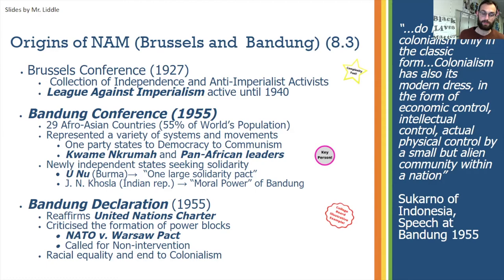As the leader of newly independent Burma, U Nu, described the conference, it was 'one large solidarity pact for the nations of Africa and Asia.' Even though these nations didn't have much military might — no jet fighters or nuclear weapons — J.N. Kodsa, a diplomat who represented India at the conference, described these nations as having a kind of moral power representing half the population of the earth, which they could use to try to leverage against the larger nations of the Soviet Union and the United States.